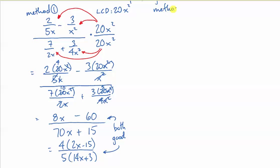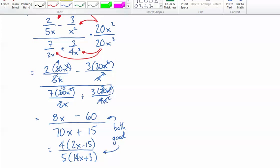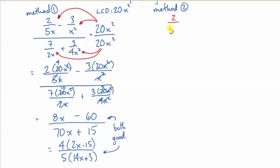Now, let me show you the second method on the same expression. You can compare it alongside and see what you think. So, I start with 2 over 5x minus 3 over x², 7 over 2x, and 3 over 4x². So, I'm going to find a common denominator here. LCD of 5x², LCD of 4x².